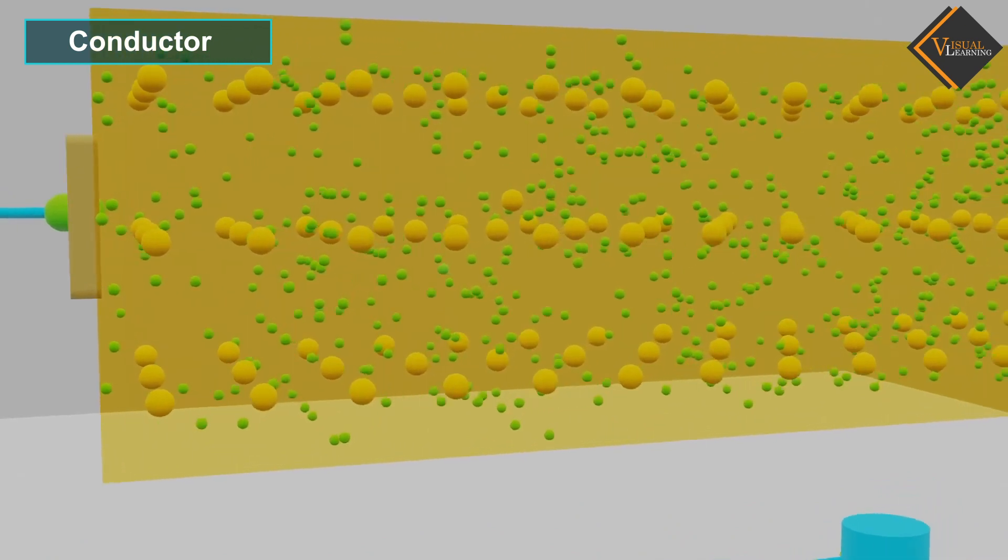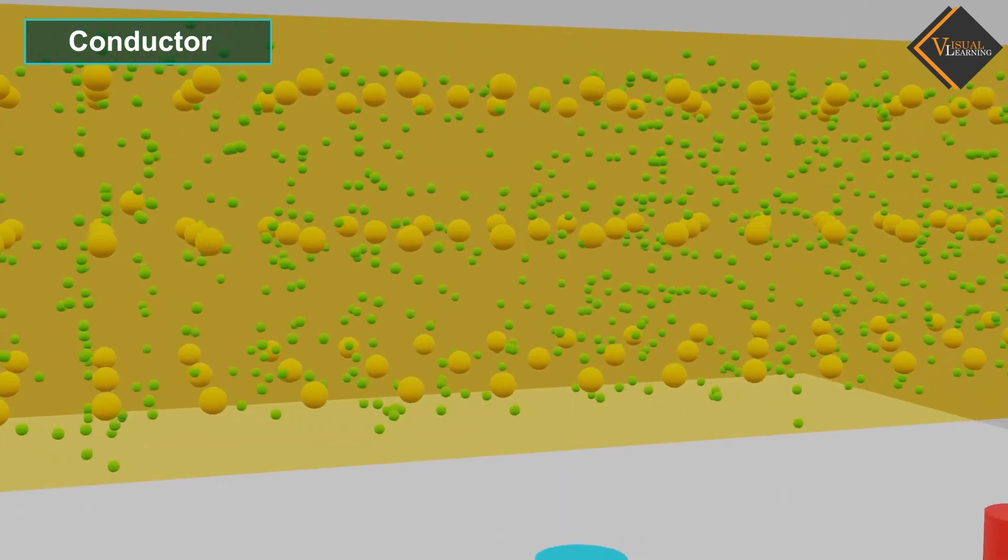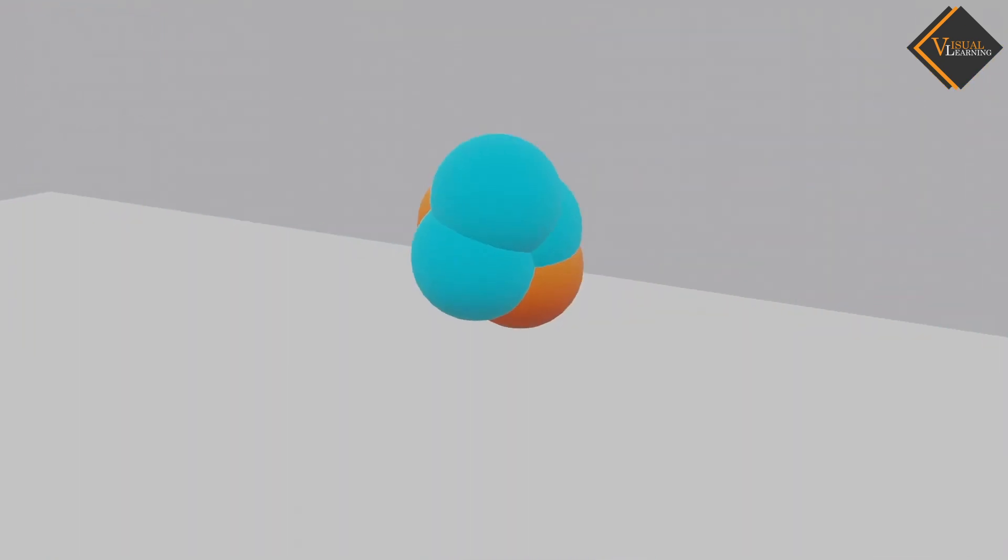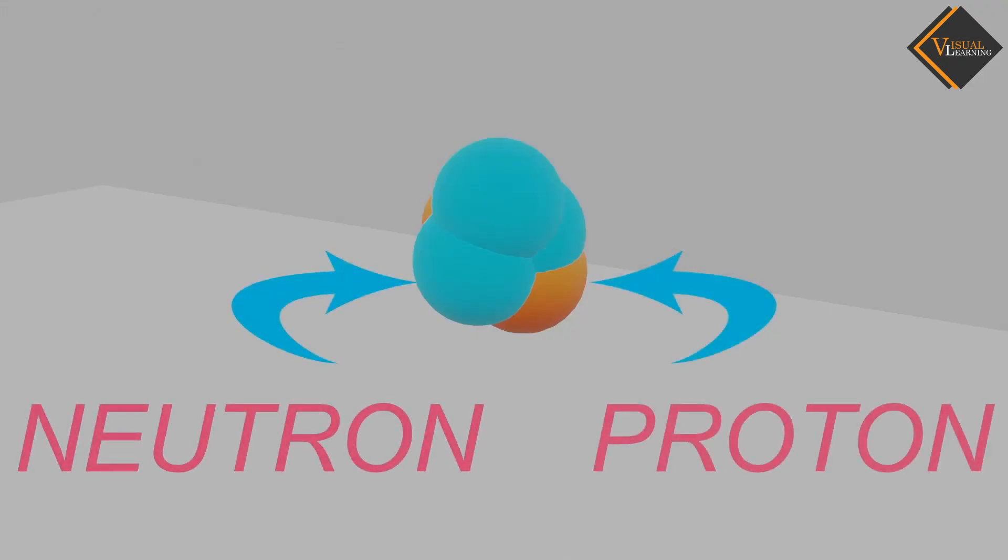Let's understand in details. As we know, atoms have fundamental particles like neutrons, protons and electrons.